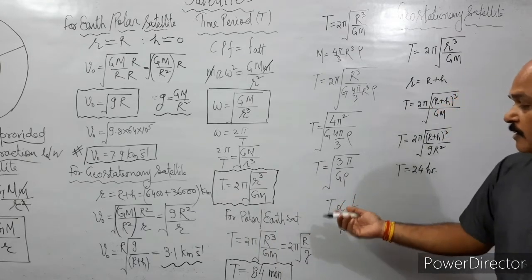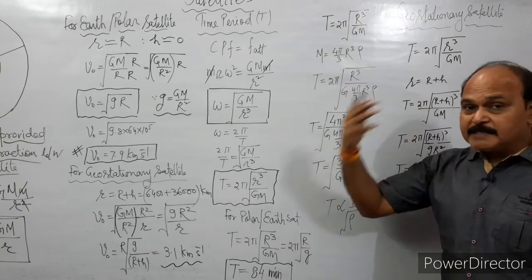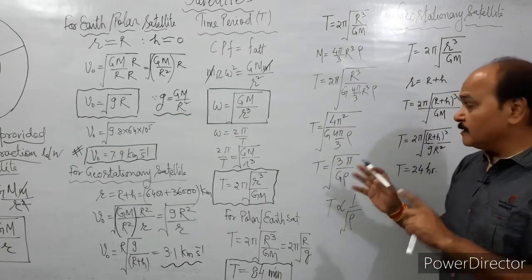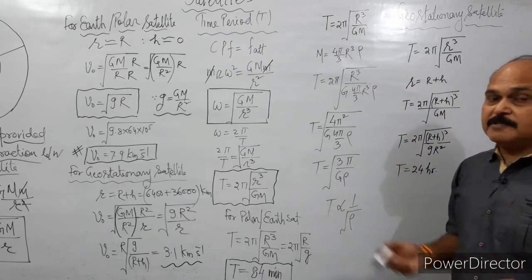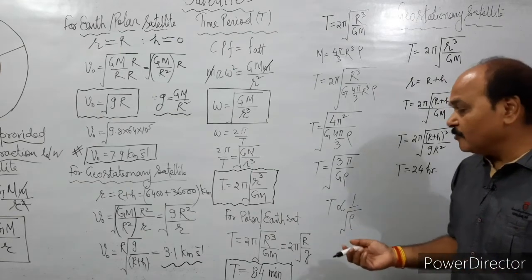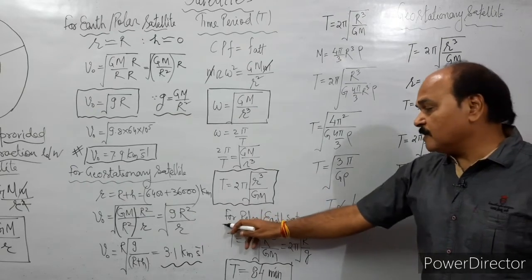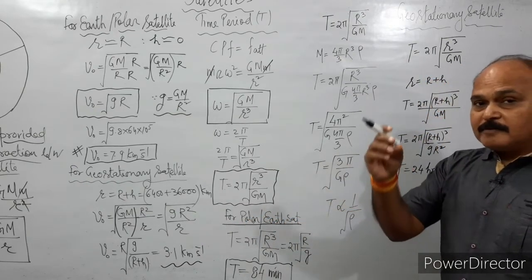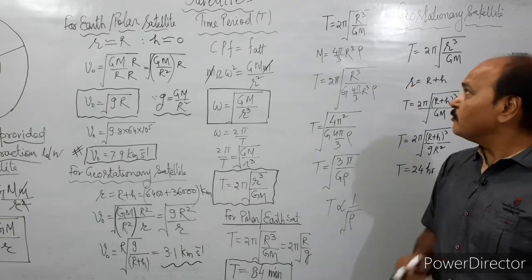We can also write down this time period in terms of the material density of the planet, and this relation is very important — it is a favorite derivation in school exams. We are going to write down the time period of a polar satellite in terms of the density of the material of the planet.